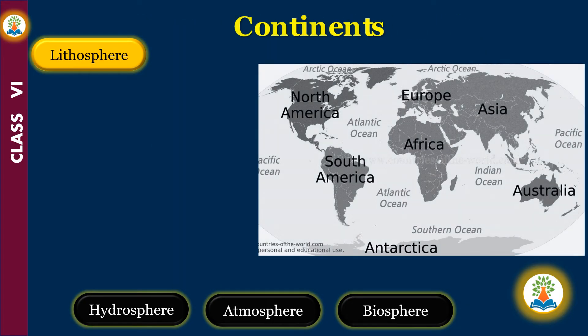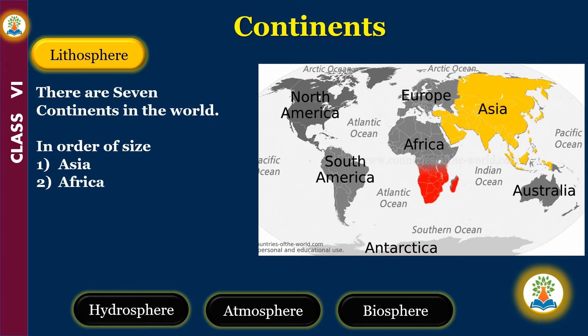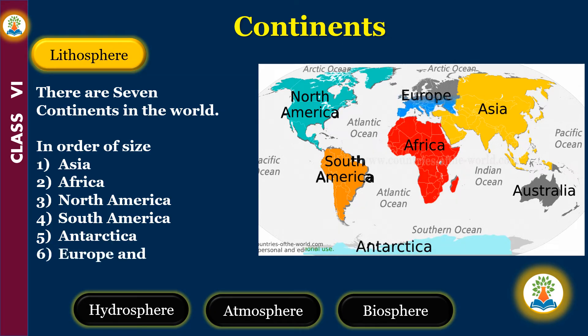There are seven continents in the world. In order of size, they are: Asia, Africa, North America, South America, Antarctica, Europe, and Australia.